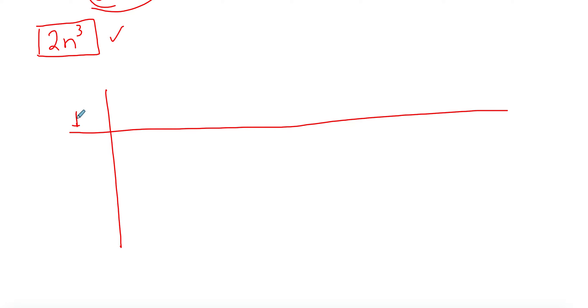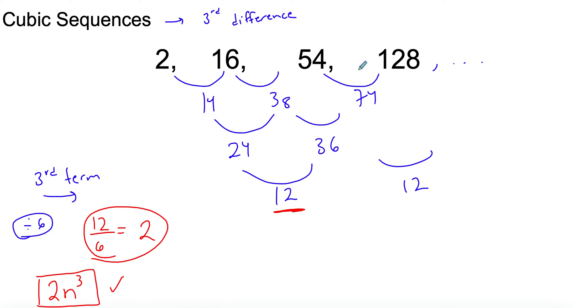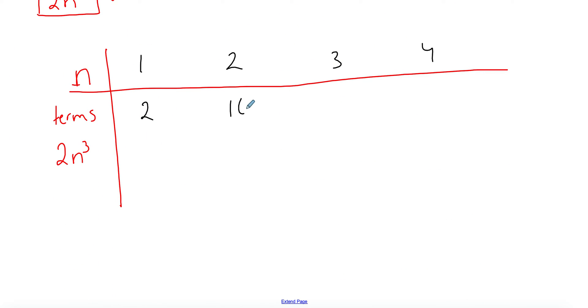Next what we do is create a table. I'm going to create a table with the n term in the beginning, then my terms, then my 2n³. The n is just the position of your numbers: 1, 2, 3, 4. We only have four terms. Your terms are your original numbers: 2, 16, 54, and 128.